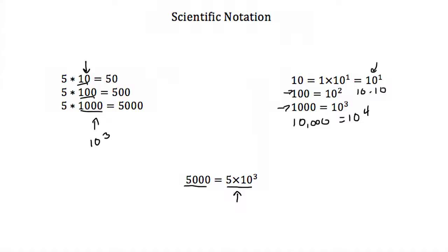Scientific notation is useful for when we have very large numbers. It's often easier just to write it as 5 times 10 to some power or some number times 10 to some power than writing this very large number out.